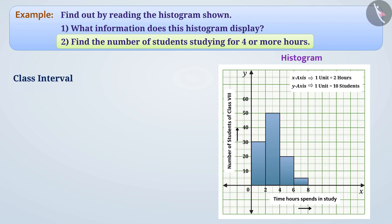Here, two class intervals 4 to 6 and 6 to 8 represent the number of students who study more than 4 hours. Looking at the class interval 4 to 6 and the length of the bar drawn above it, it can be understood that there are 20 students who study 4 or more than 4 hours but less than 6 hours.